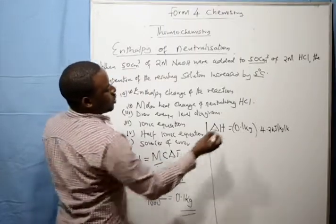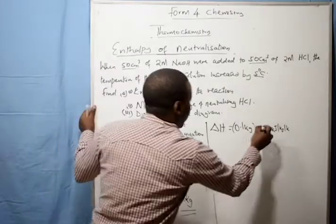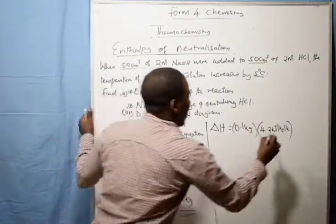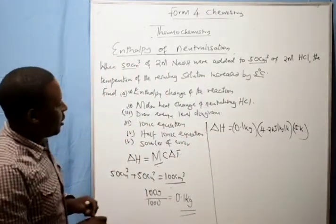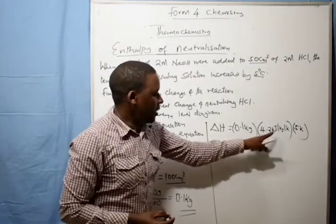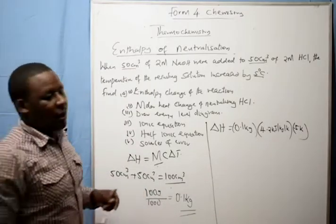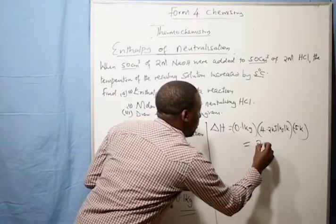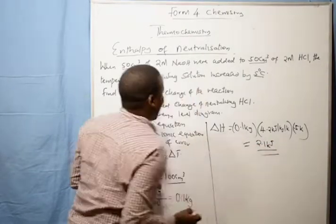Our temperature change, delta T, comes to: the temperature of the mixture increases by 5 degrees. Remember, when you calculate the enthalpy you change degrees into kelvin. Therefore our delta T becomes 5 kelvin. So to get enthalpy change, you multiply mass, capacity, delta T. When you do that you get an enthalpy of 2.1 kilojoules.